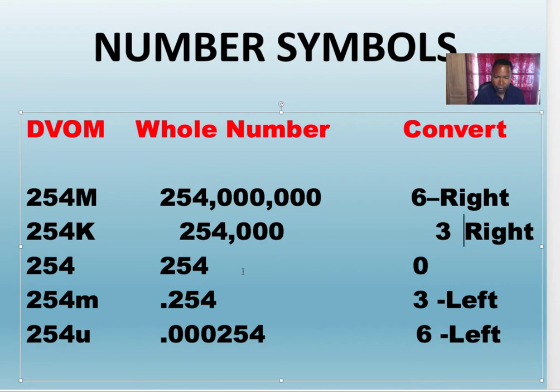So 254M, that's 254 million. You move the decimal six places. So the decimal is here, you move it six places: one, two, three, four, five, six. Now the decimal is here, six places to the right.